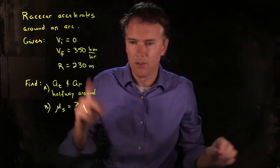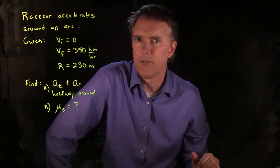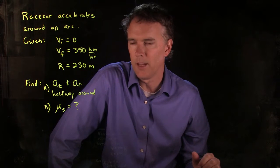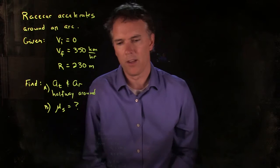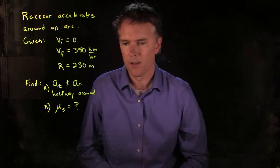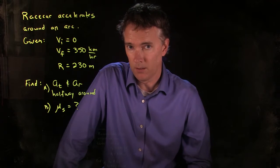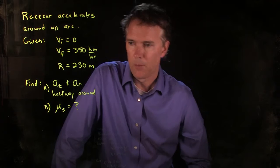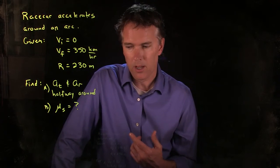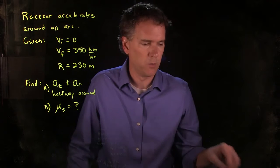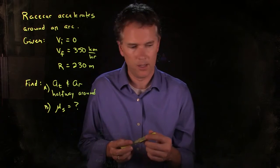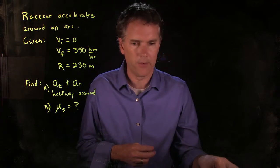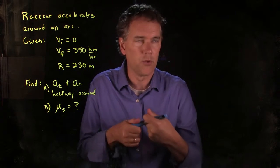In this problem, a race car accelerates around an arc given the following: initial speed is zero, final speed is 350 kilometers per hour, and the radius of that arc is 230 meters. What they want us to figure out is the tangential acceleration, the radial acceleration when it's halfway around this arc, and then what coefficient of friction will keep the car on the track. So we got to think about the problem for a second. Let's see if we can draw it out. The very first thing you should always do is just draw it out.